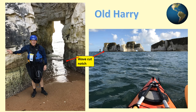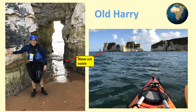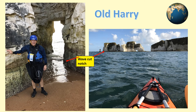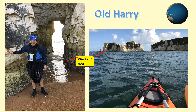Here we can see some images of Old Harry at low tide. Remember, most of the erosional processes occur at the base of the cliff around the wave-cut notch. The notch is shown as the most worn away part of the cliff, where the sea regularly attacks it through abrasion in storms and the saltwater solution dissolving the base.